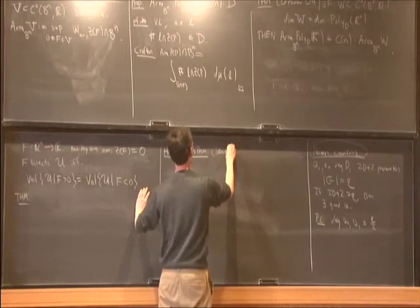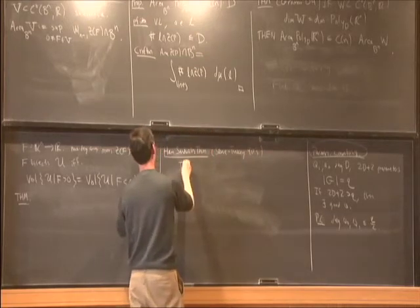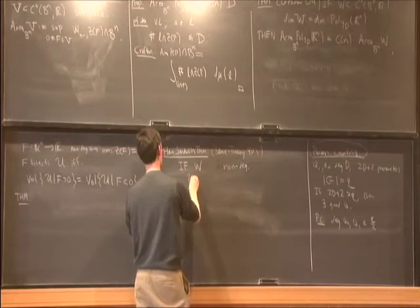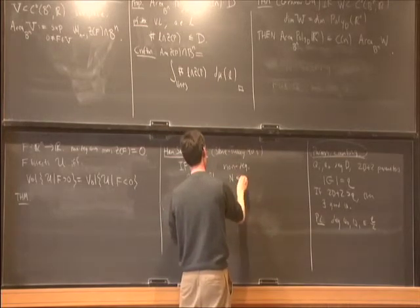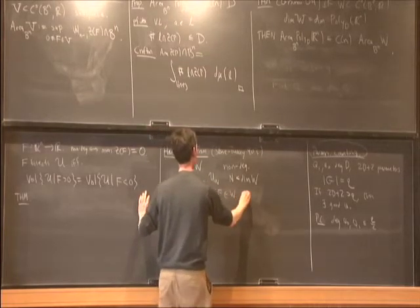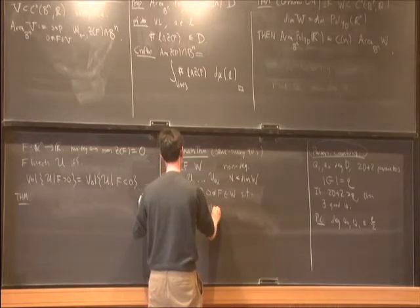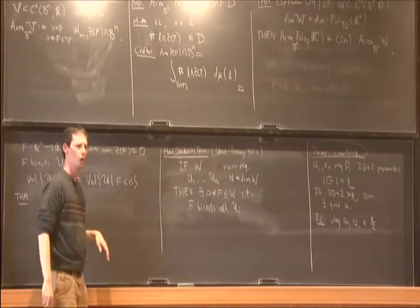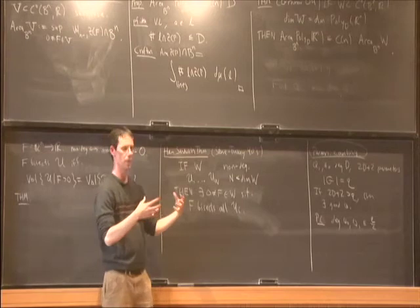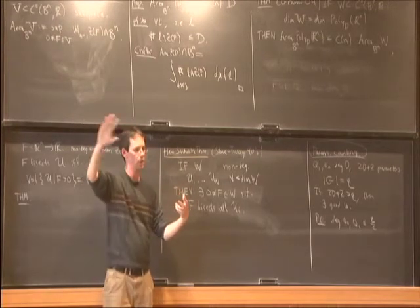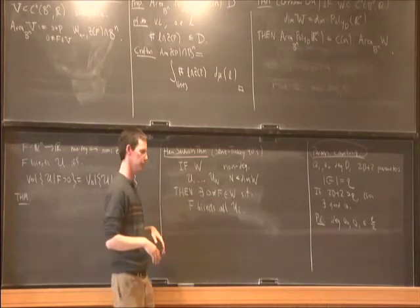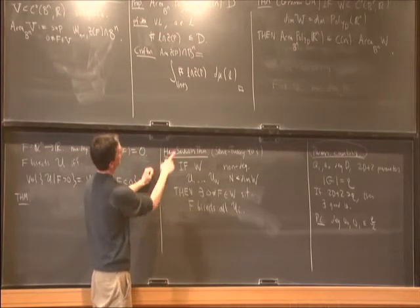Ham sandwich theorem: if W is a non-degenerate vector space of continuous functions, and we have sets U1 through U_n where n is less than the dimension of W, then there is a function in W that bisects them all. This was originally proven for affine linear functions — the zero set of f is a plane — so you'll often hear it phrased as: if you have n finite volume sets in R^n, there's a plane that bisects all of them. But Stone and Tukey analyzed the proof and realized it's much more general, and for free it gives this.